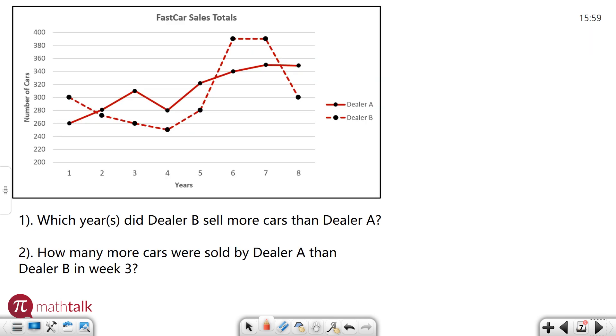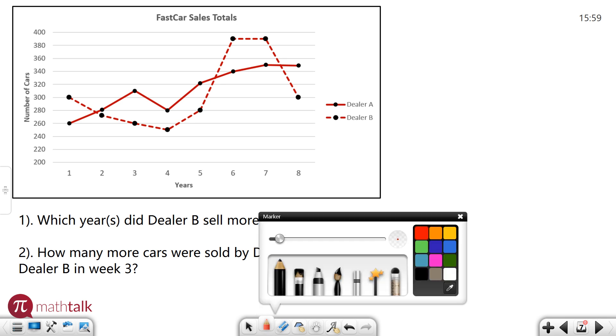We have another line graph. In this case we have two different lines that are kind of coded differently. One of them is solid. One of them is dotted. And so we have two questions as well. In which year or years did dealer B, which is going to be our dotted line, sell more cars than dealer A, which is our solid line. So I'm going to change colors so that's easier to tell.